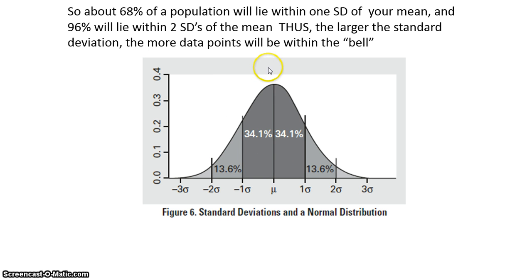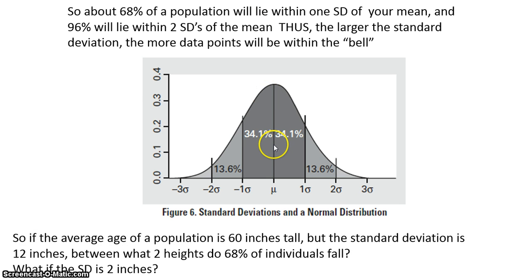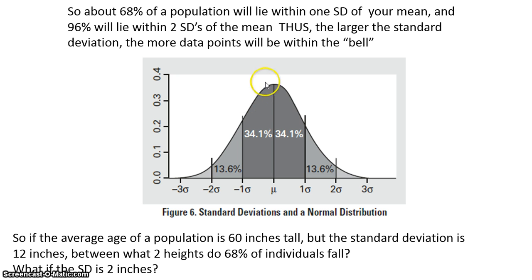So standard deviation is a number. It has a complicated-looking formula, but you are not required to know how to use the formula — you just have to know what it means. Let's say that our average number, in the center of our bell curve, was 60 inches. This represented the average of a bunch of heights we measured, and it was 60 inches tall. One standard deviation in each direction means that 68% of our data lies plus or minus that one standard deviation.